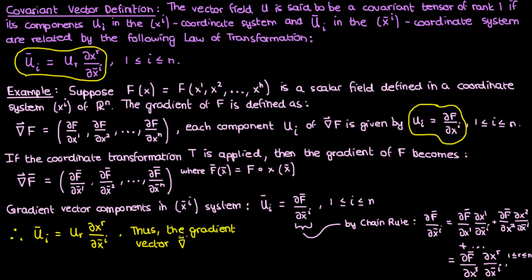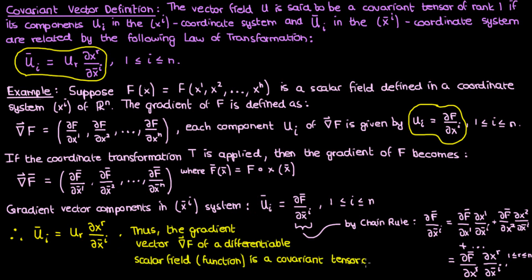This proves that the gradient vector of a differentiable scalar field is a covariant vector because its components follow the transformation law of covariant vector components. Generally, most vectors that you're used to seeing in physics — like displacement, velocity, acceleration, etc. — are contravariant vectors. You probably haven't seen many covariant vectors in physics. Generally, the most well-known covariant vectors are gradient vectors.